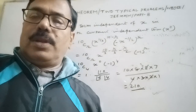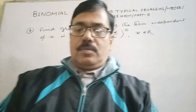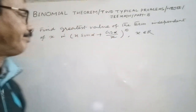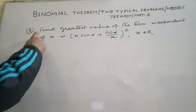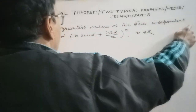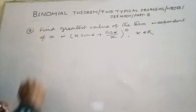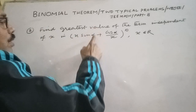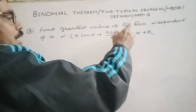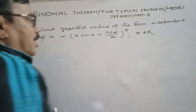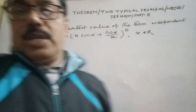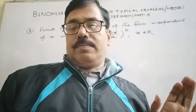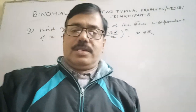Now consider the second problem: find the greatest value of the term independent of x in (x sin α + cos α / x)^10, where x is a real number. First find the independent term, then find its greatest value.